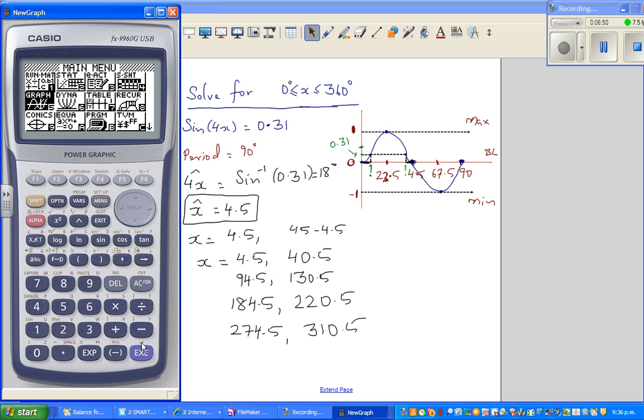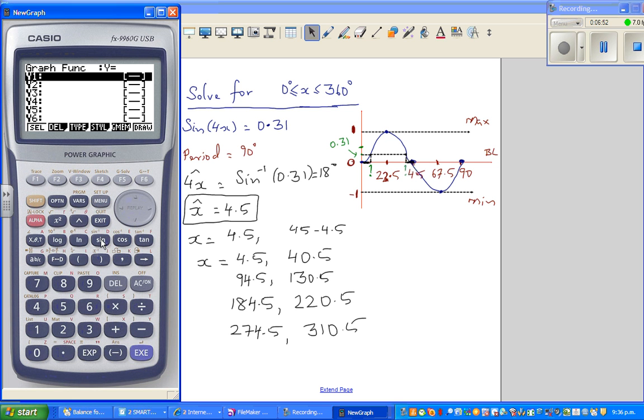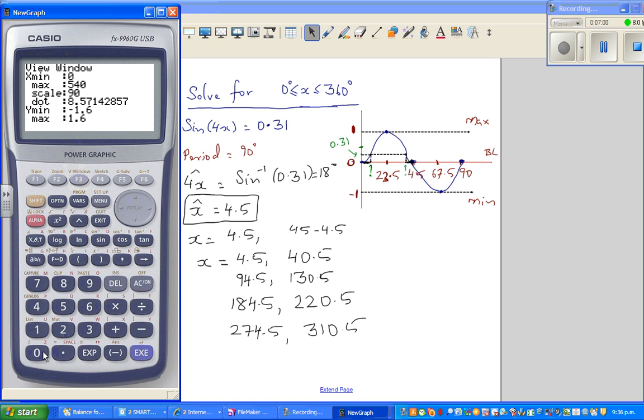So go to your graph, and type in sine of 4x, like this. And you need to check your trig scale, between 0 to 360, step of 22.5, so that you can see the 4 cycles. And the scale of y-axis is fine.